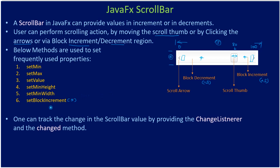One can track changes in scroll bar value by providing a change listener and overriding the changed method.